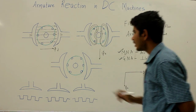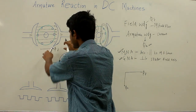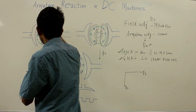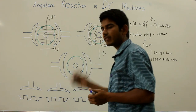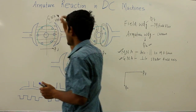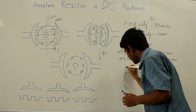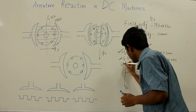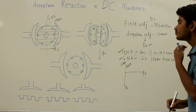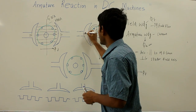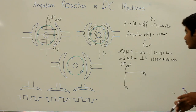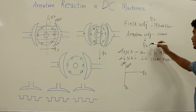At this juncture, when the machine is not loaded, we can see the magnetic neutral axis. The geometric neutral axis is perpendicular to the stator field axis, and the magnetic neutral axis coincides with the geometrical neutral axis. So initially, the GNA and MNA are the same coinciding axis. When the machine is running, two kinds of flux are present: the main field flux and the armature flux.